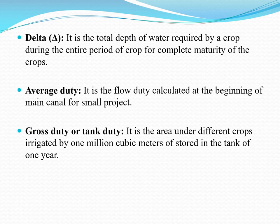Next is delta: it is the total depth of water required by a crop during the entire crop period for the complete maturity of the crop. It is denoted by the symbol delta and expressed in centimeters.